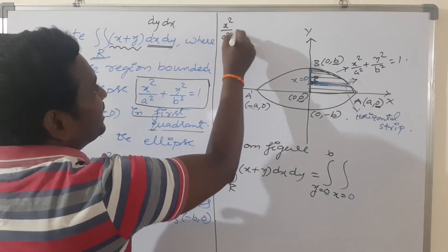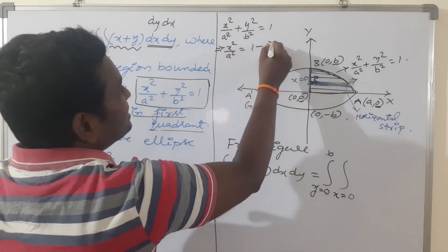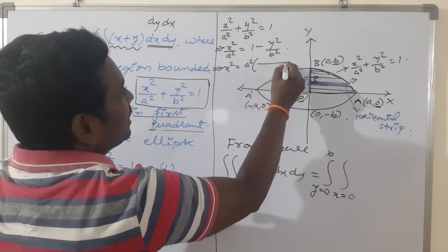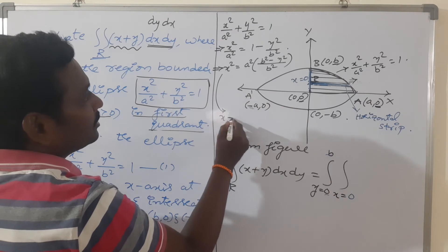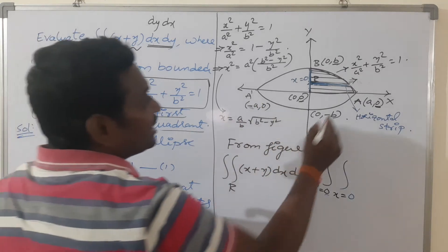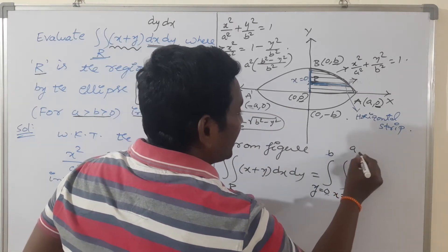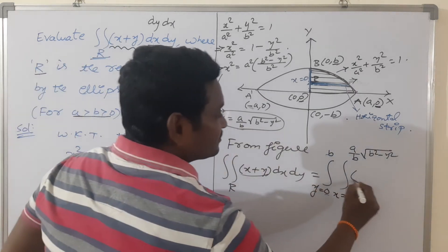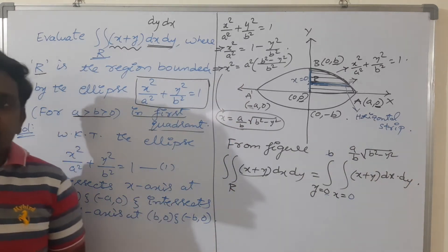For x limits, the lower part of the horizontal strip lies on the y-axis whose equation is x = 0, so the lower limit is 0. For the upper limit, we find x from the ellipse equation: x squared by a squared plus y squared by b squared = 1. From this, x squared = a squared times (b squared minus y squared) divided by b squared. Taking the square root, x = (a/b) times the square root of b squared minus y squared. So x varies from 0 to (a/b)√(b² − y²).